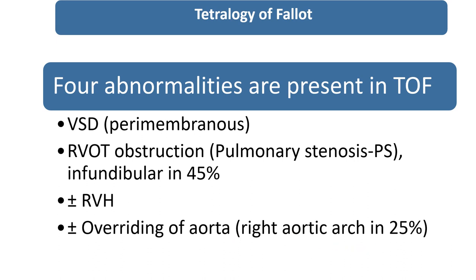Right aortic arc is present in 25% of cases. So these are the four abnormalities which are present in the patients of tetralogy of pellets.